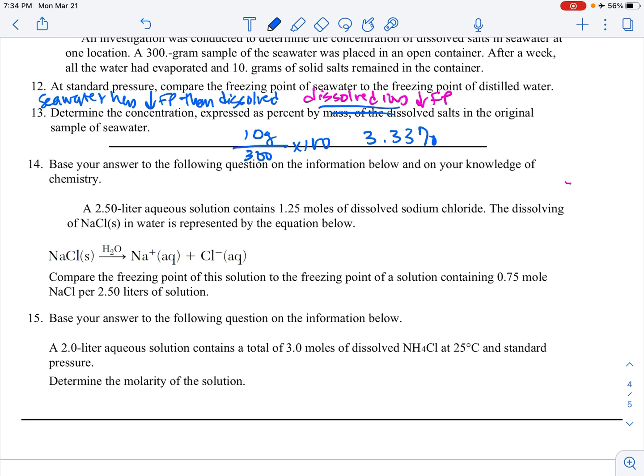Okay. A 2.5 liter aqueous solution contains 1.5 moles to dissolve sodium chloride. The dissolving of the sodium chloride is represented below. Compare the freezing point of this solution to a freezing point of a solution containing 0.75 moles. So 1.25 compared to 0.75. So 1.25 moles is going to have more ions. And whichever has more ions is going to have a lower freezing point. So the first solution is going to have a lower freezing point than 0.75 moles. Because there's more ions in solution lowering the freezing point.